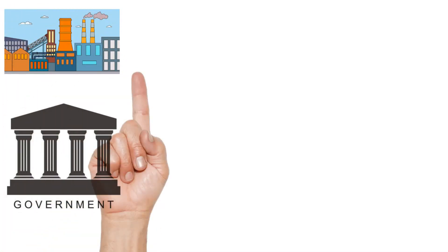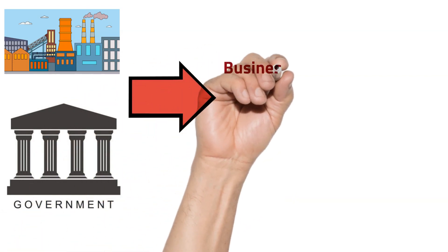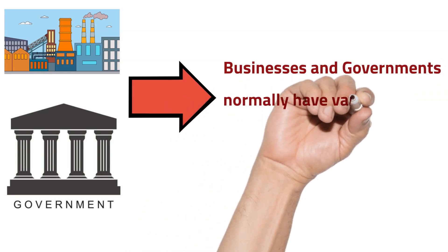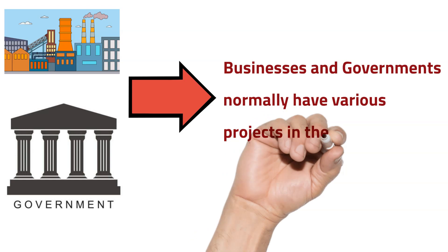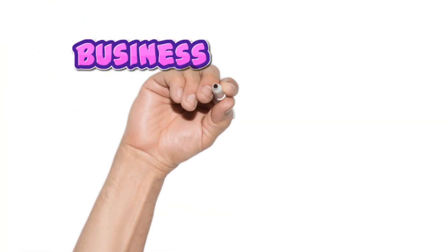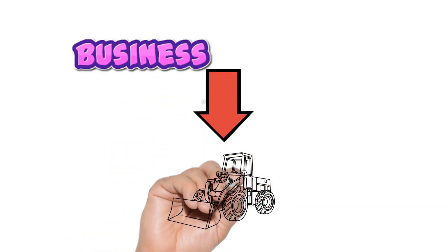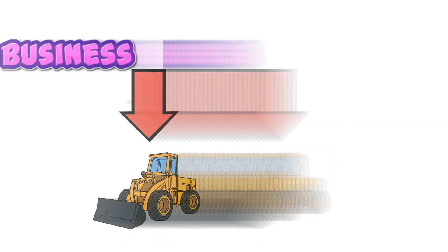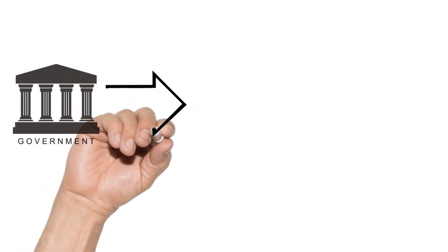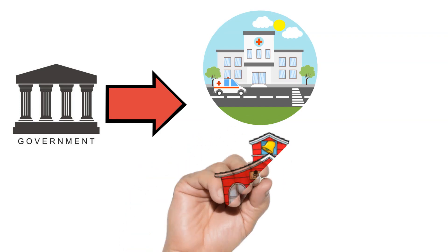Businesses and governments will normally have numerous projects in the pipeline. One key question, however, is how to finance those projects. Businesses, for instance, may require funds to invest in machinery. The government, on the other hand, may require funds to build hospitals as well as schools.